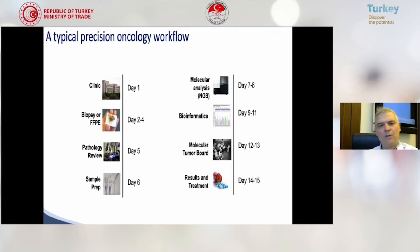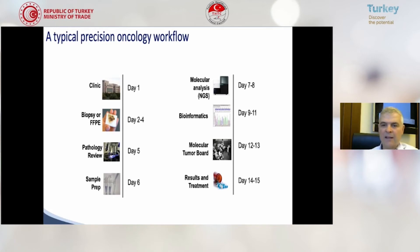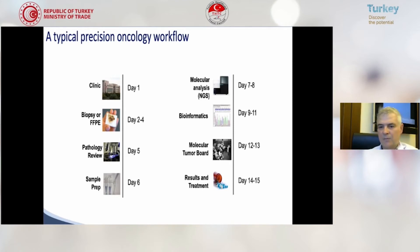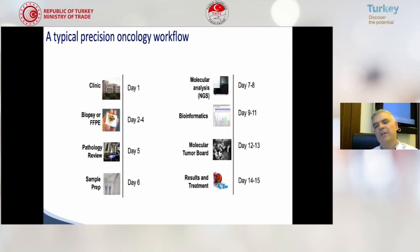A typical precision oncology workflow: on day one, when a patient visits a clinic, we take the biopsy within two to four days. Pathology review takes up to five days, sample preparation on day six, and molecular analysis on day eight. Bioinformatics takes nine to eleven days. The molecular tumor board should be gathered in the second week, and by the third week results and treatment can start.